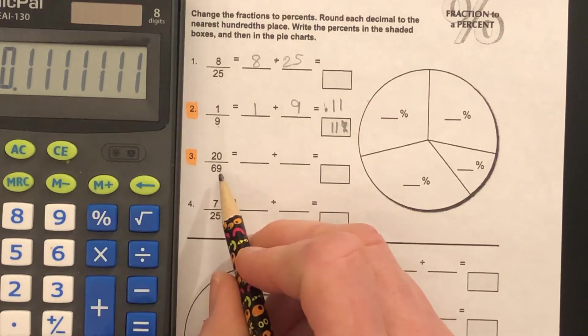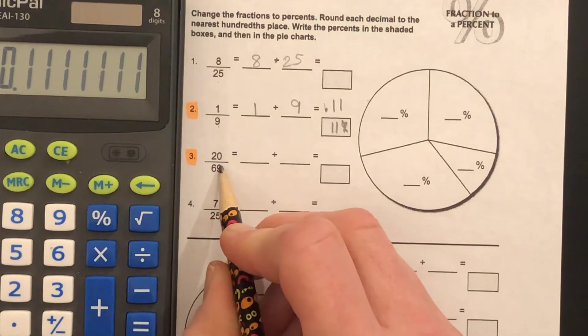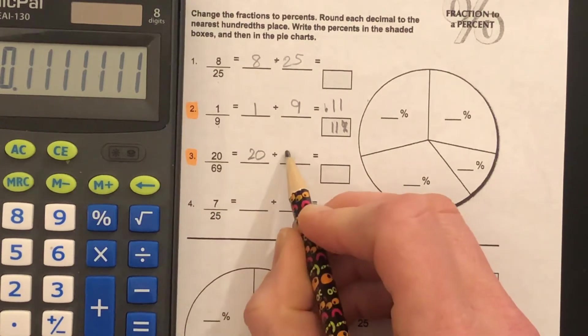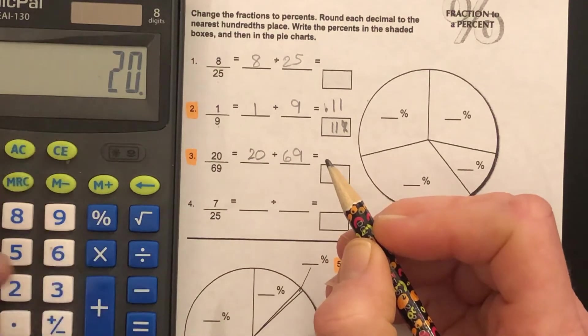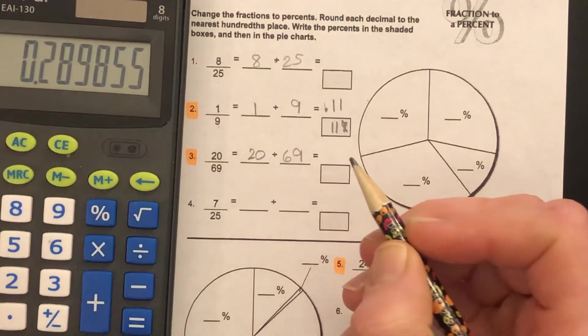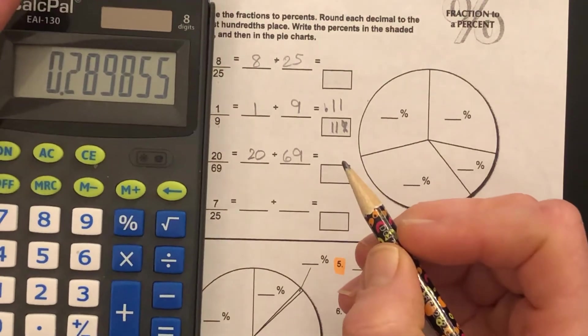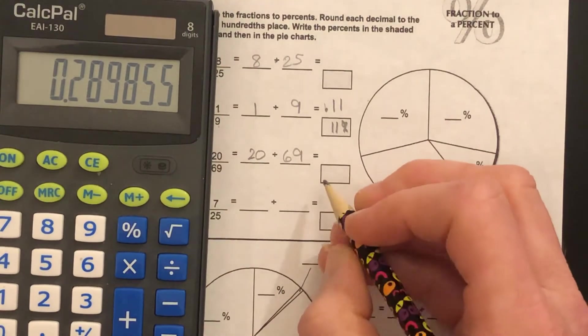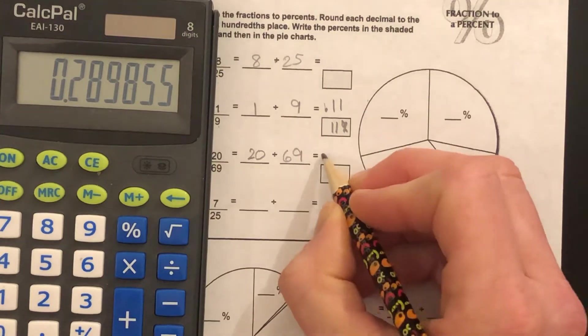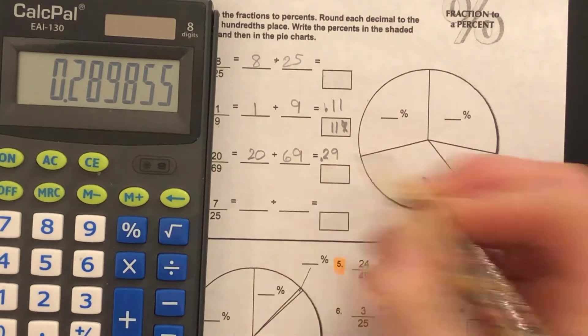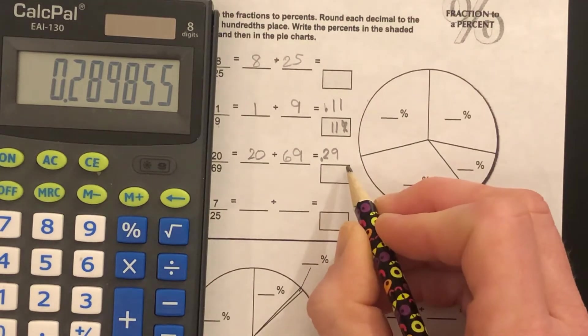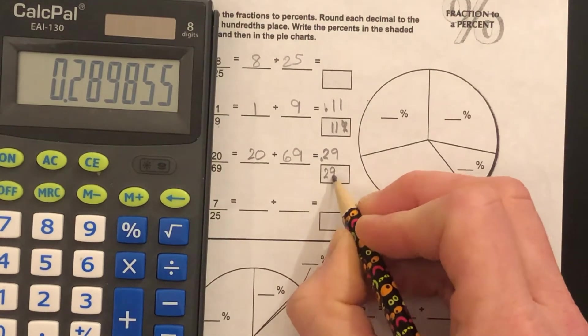We've got number three: 20/69. Twenty divided by sixty-nine. 0.289, so it's going to round up to the nearest hundredth, so it's 0.29. Twenty-nine hundredths in decimal form is twenty-nine percent.